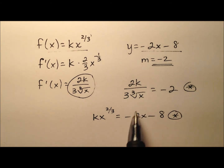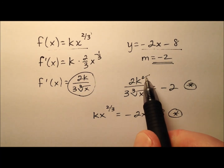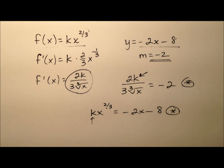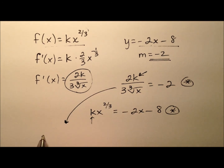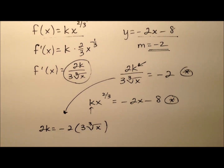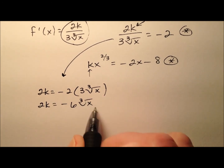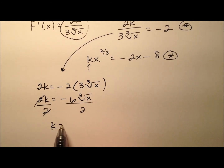Now we have a nice system of equations — two variables, x and k, and two equations. The easiest approach is to solve for k in the first equation and substitute into the second. Multiplying both sides by 3 times the cubed root of x gives 2k equals negative 6 times the cubed root of x. Dividing both sides by 2, k equals negative 3 times the cubed root of x.